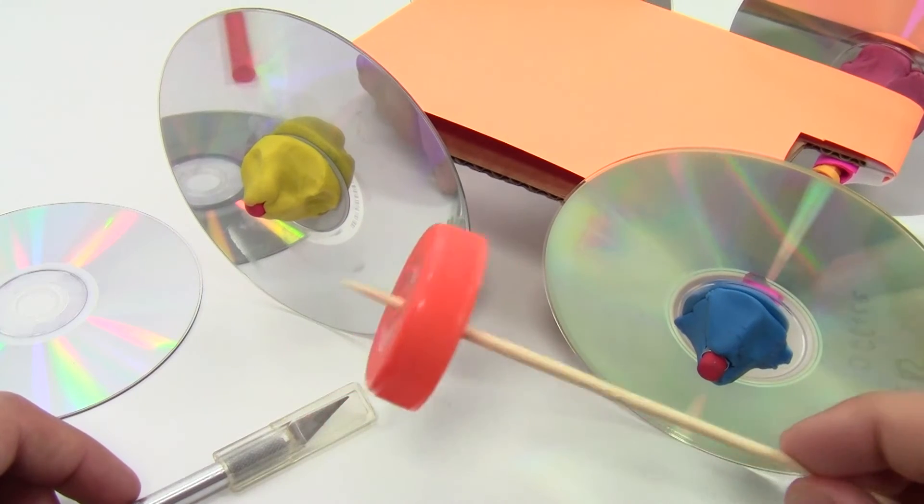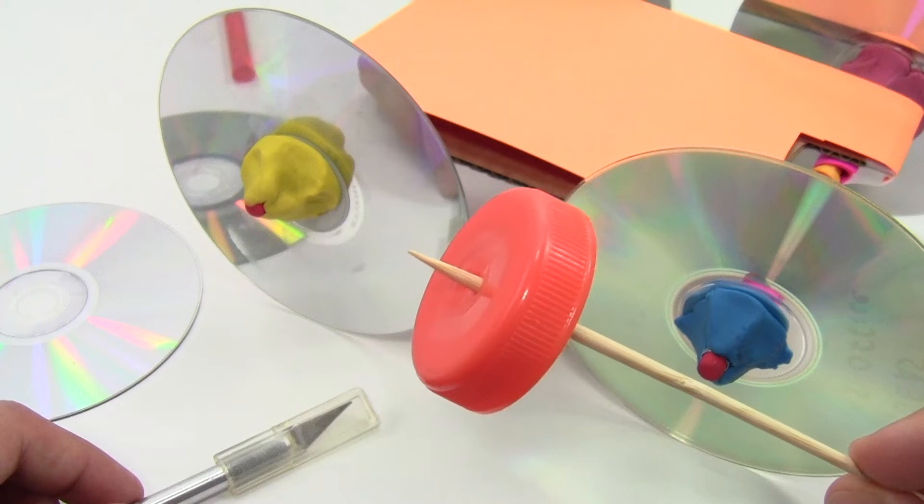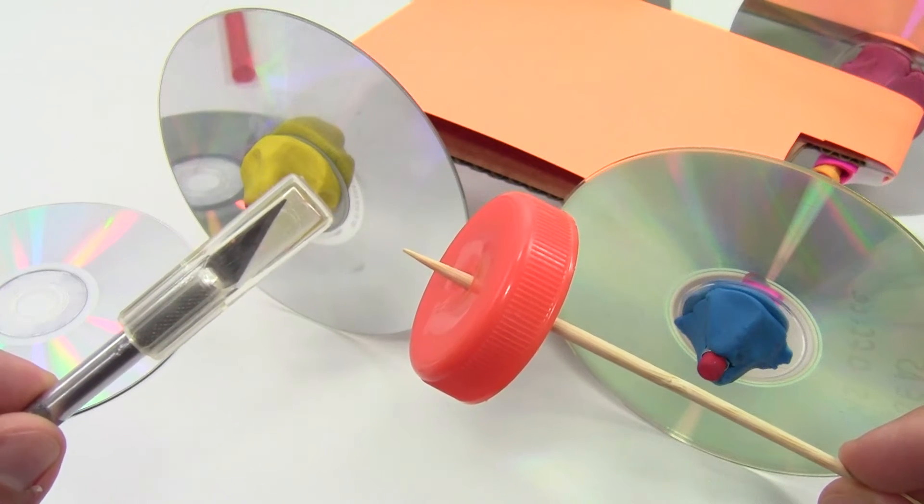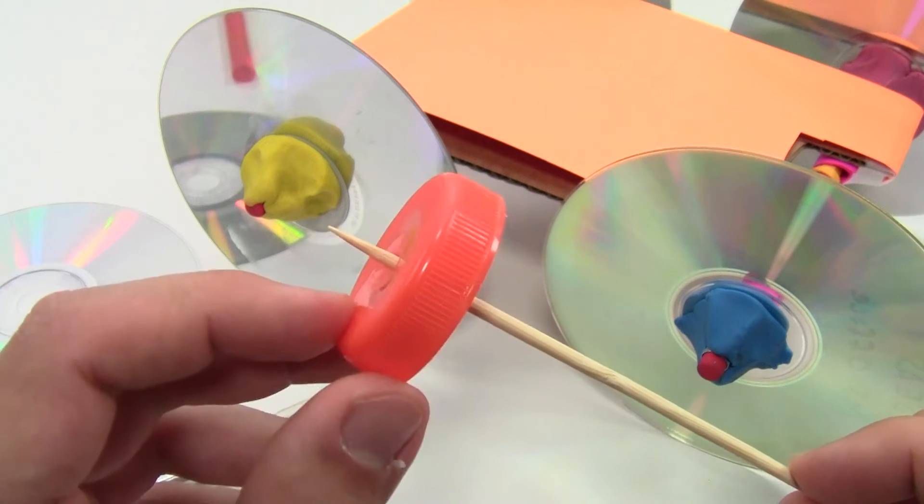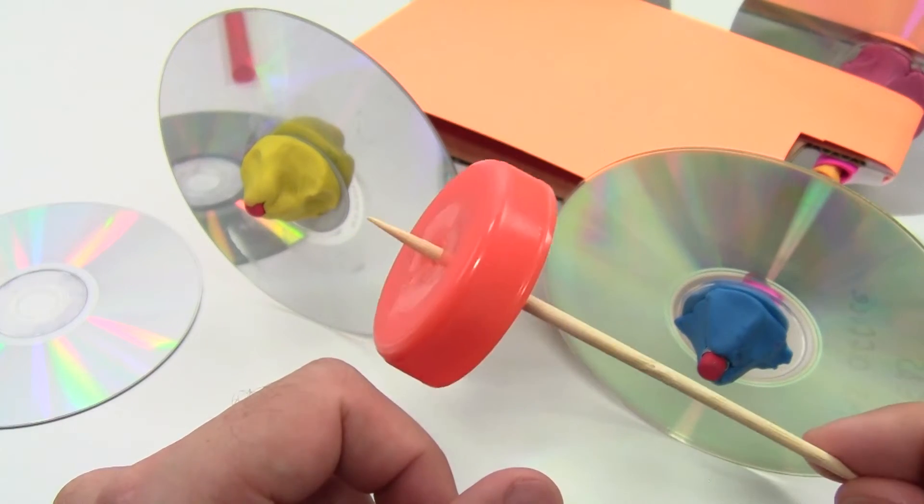There are also different ways to attach the wheels to the axles. For example, with a plastic bottle cap, you can poke a hole in the middle of the bottle cap using a hobby knife, and then press a wooden skewer through the hole. Friction will be enough to hold the wheel in place.